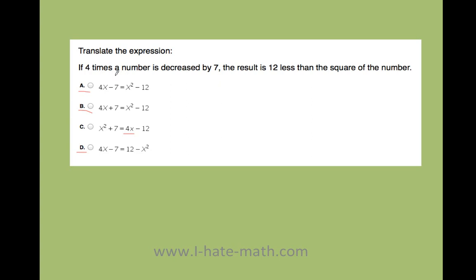But look how it starts. If 4 times a number is decreased by 7, well, decreased means that you have minus 7. So most likely this is going to be 4X and then minus 7.